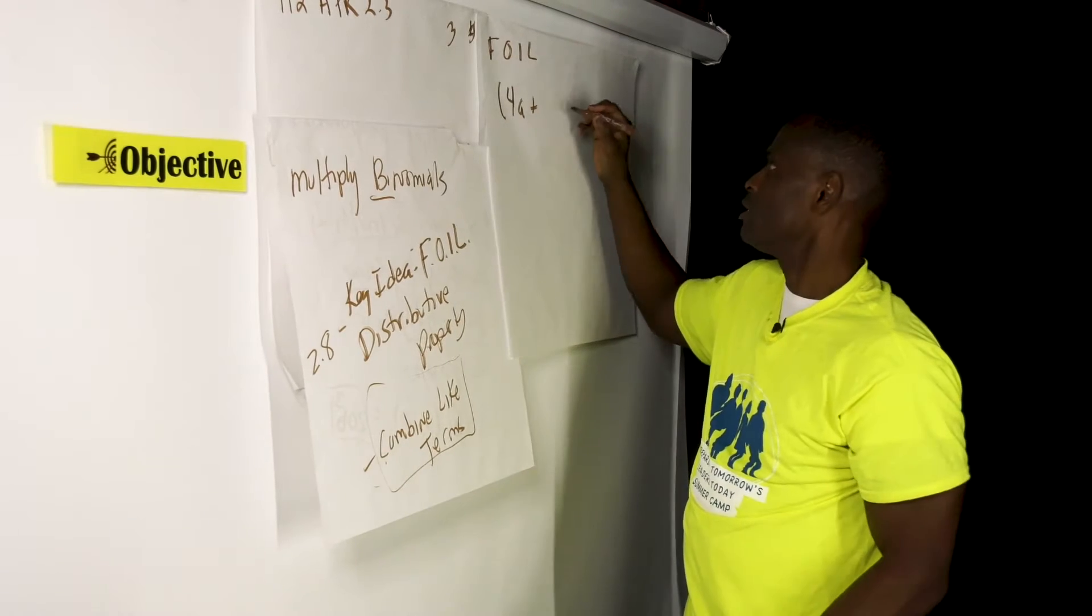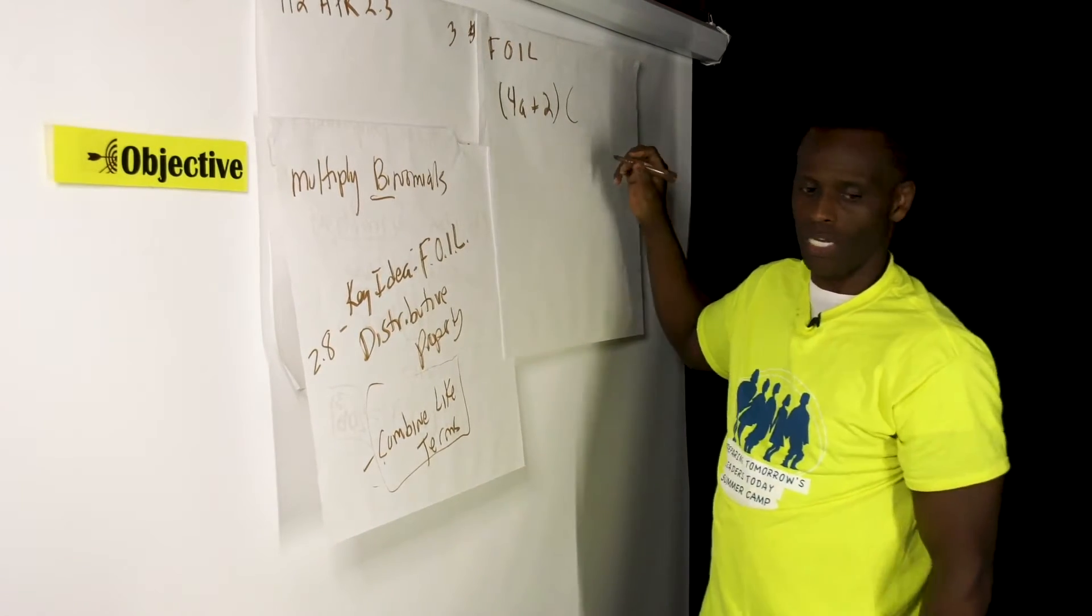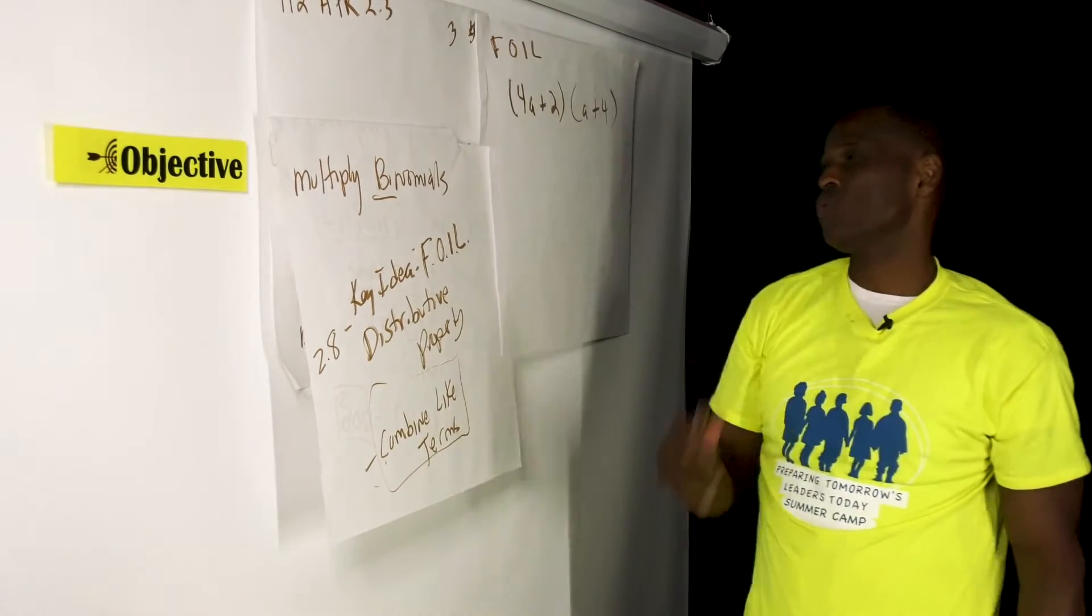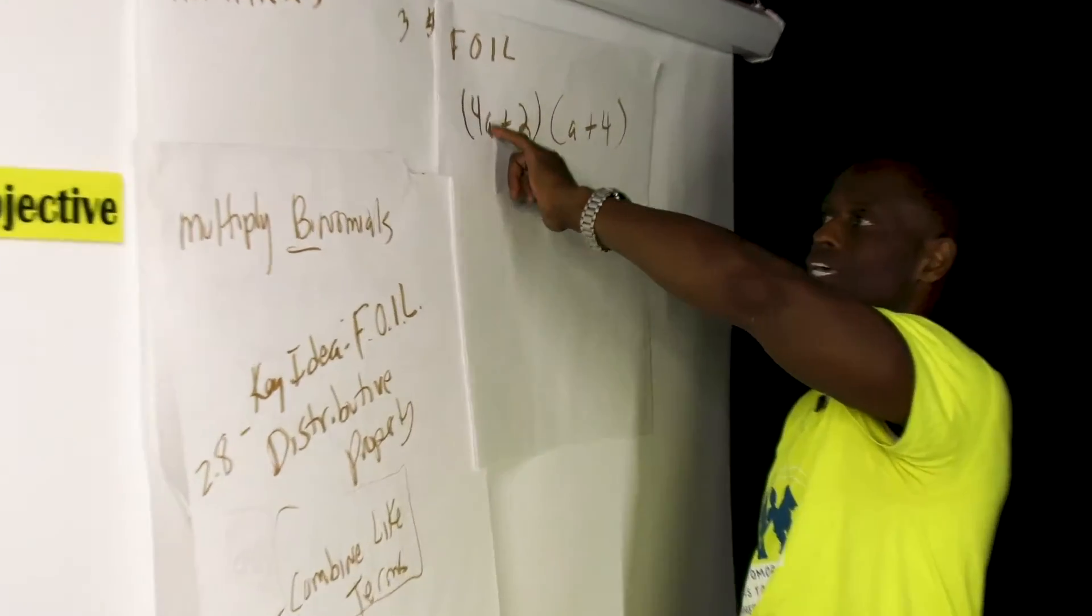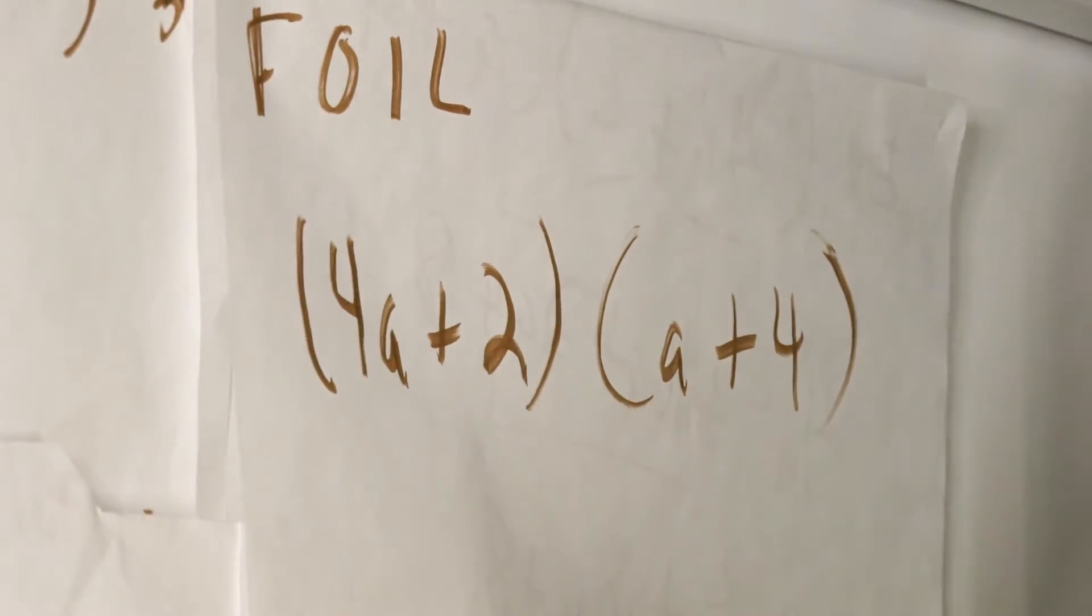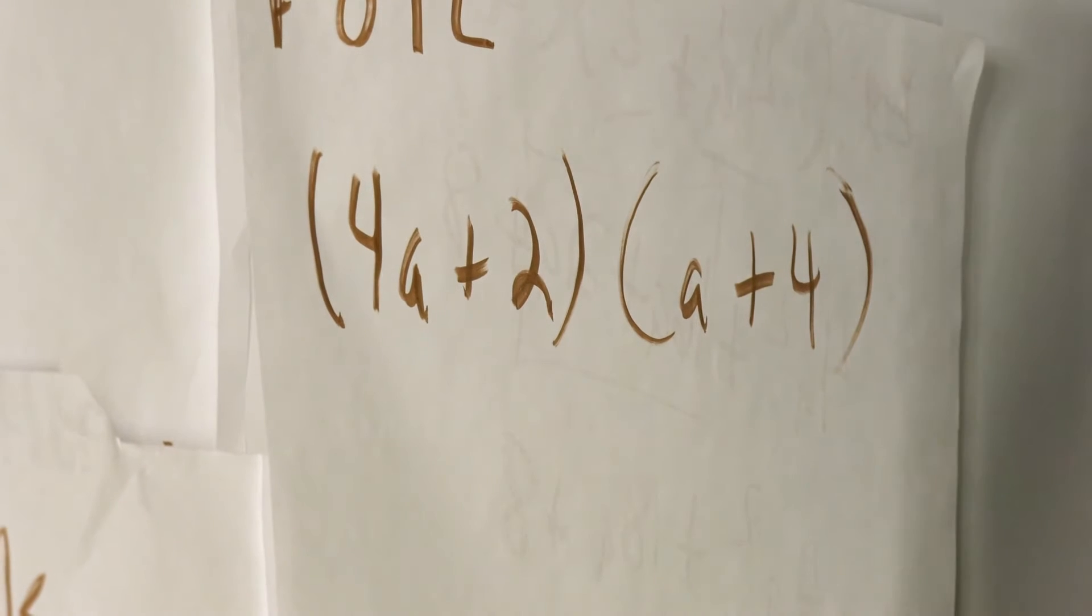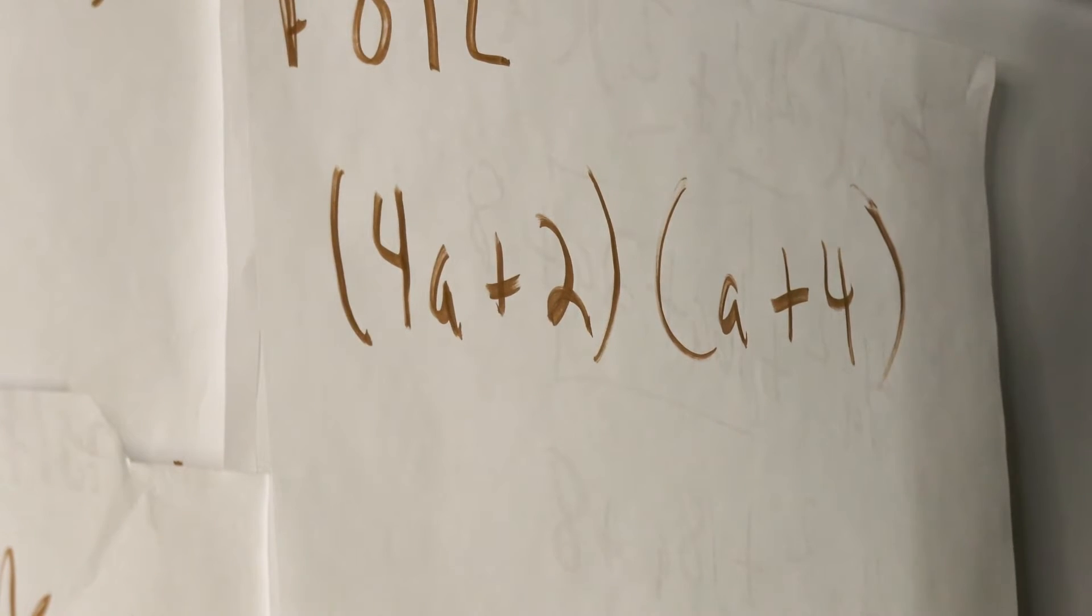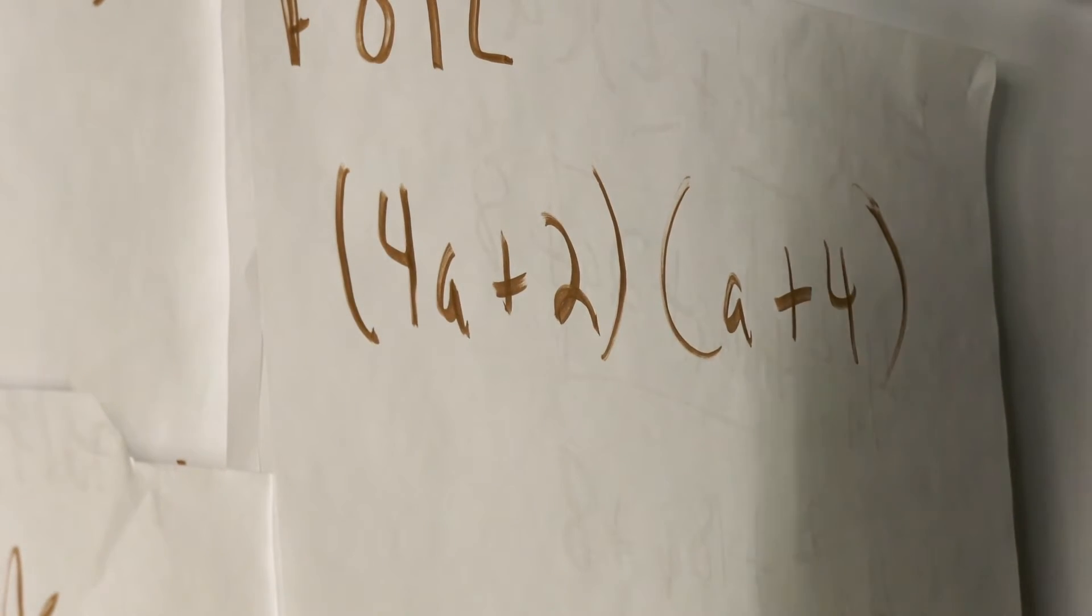4a plus 2 is our first binomial, and times a plus 4. So when you read this, let's keep thinking in the algebra mindset. The coefficient here is 4. The variable here is a. But this really says 1a to the first power plus the constant of 2. And this is 1a to the first power plus the constant of 4. So if you say this over and over again, your brain will automatically read and see it and help you process information much more efficiently and quickly.